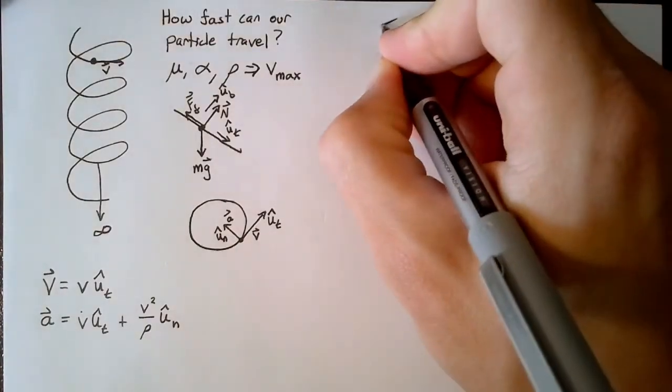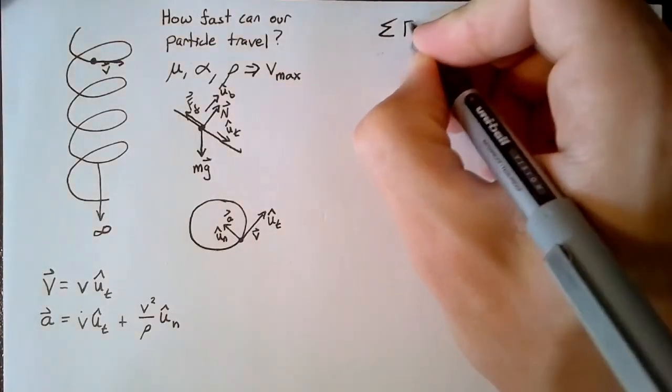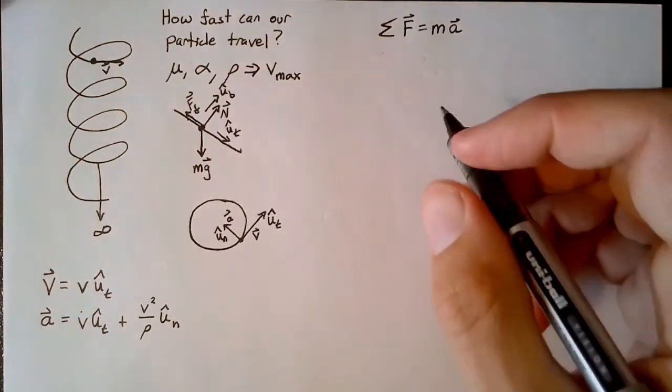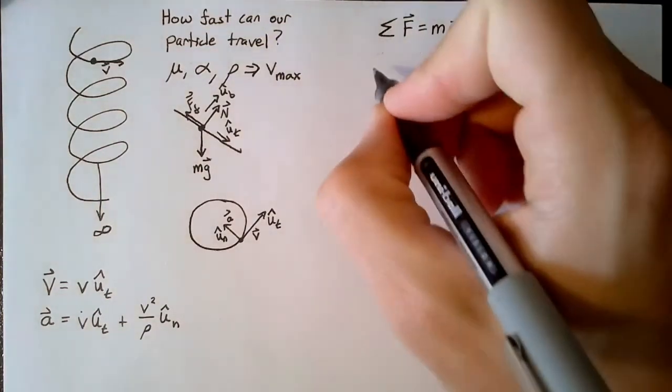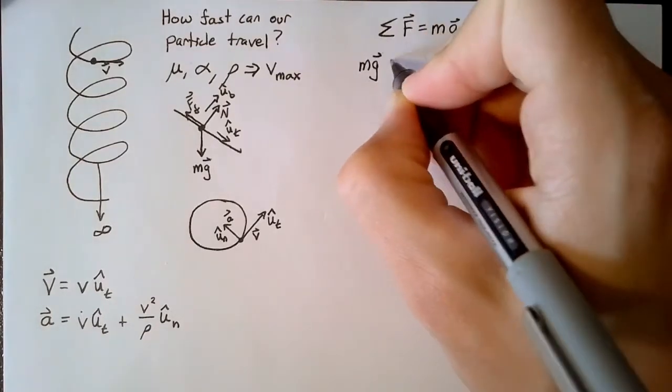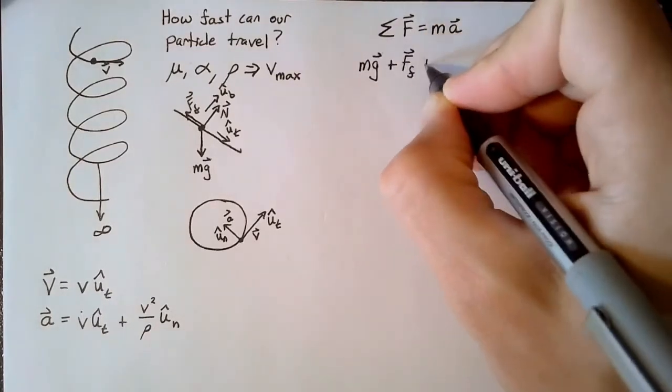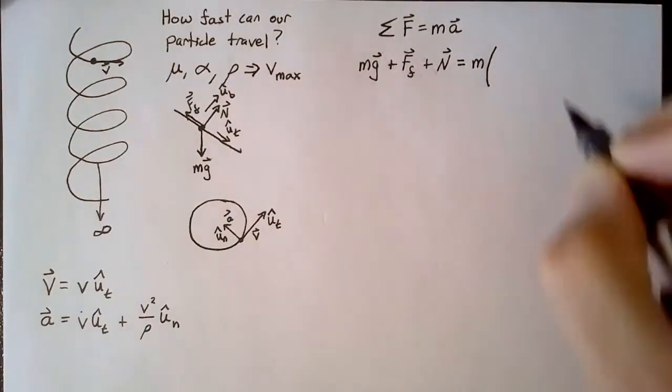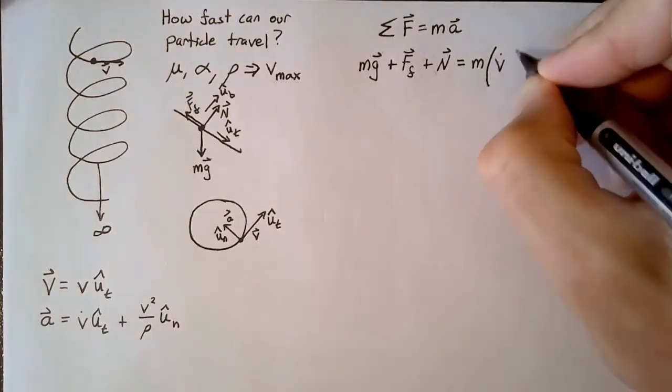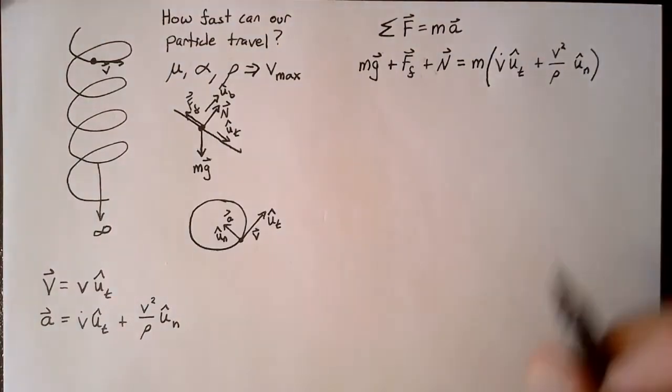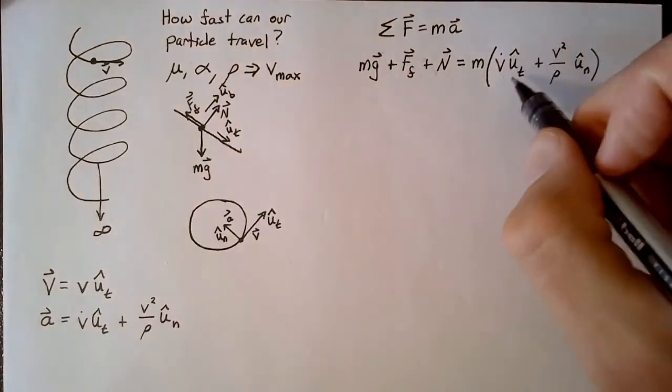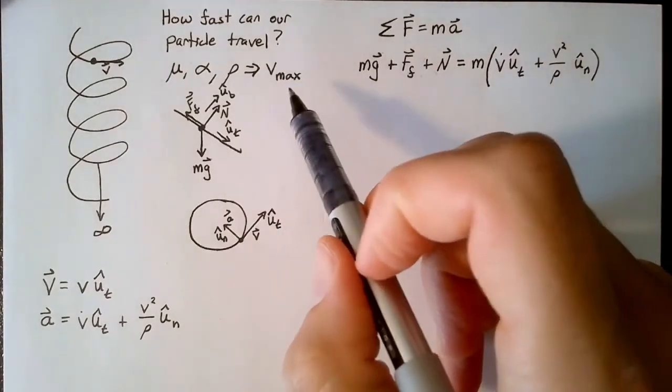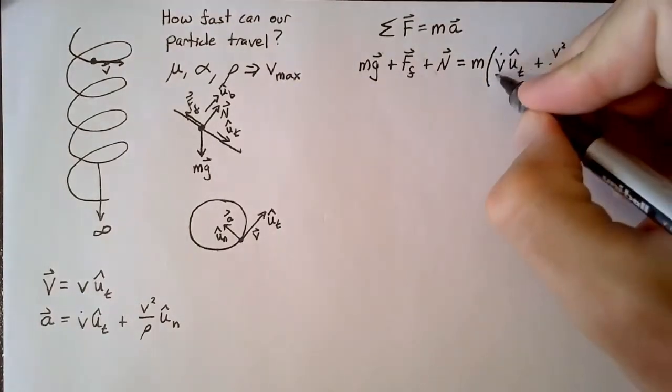So the equation that we're going to solve is sum of the forces is equal to mass times acceleration. First thing we'll do is just write out all of the forces. So we have gravity, we have friction, and finally the normal force. And these will be equal to mass times our acceleration vector. The first thing we're going to do is get rid of this v dot term. One of our assumptions is that we're approaching a steady state velocity, which means that this v dot term is going to go to zero.